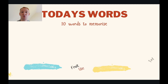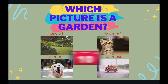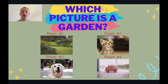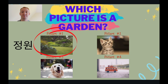Let's go into our first question today. Of these four pictures, which one is a garden? You have ten seconds. The answer is picture one — it was a garden. This garden is green. This garden is large. This garden has many bushes. Okay, let's go to our next question.